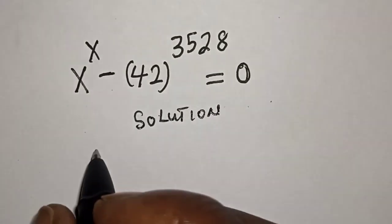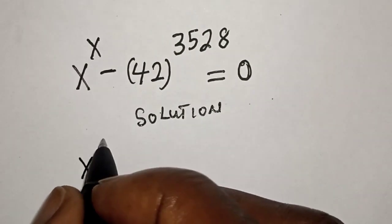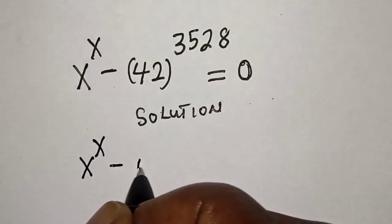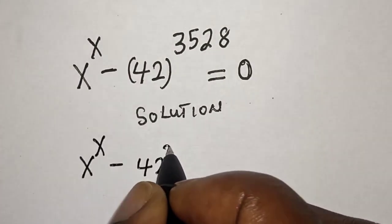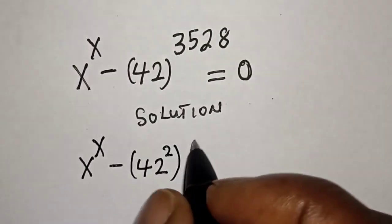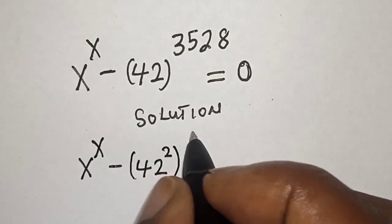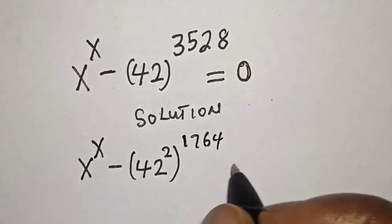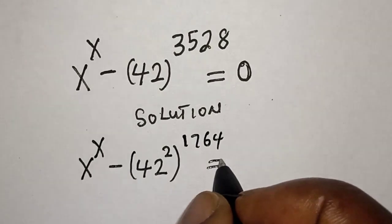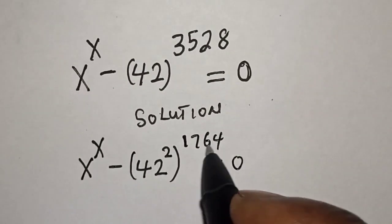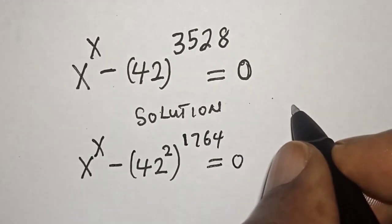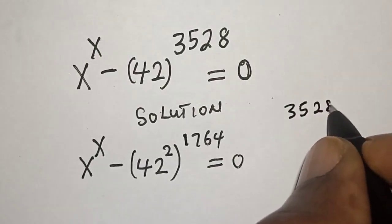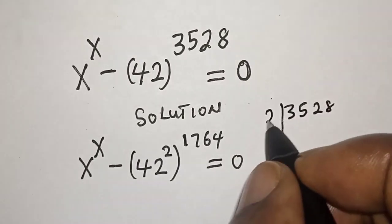We rewrite this as x raised to power x minus 42 squared, raised to power 1764, is equal to 0. To get 1764, we take 3528 and divide by 2.